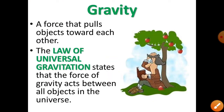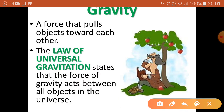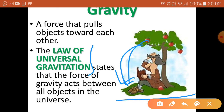In this slide you can see that gravity is a force that pulls objects towards each other. The law of universal gravitation states that the force of gravity acts between all objects in the universe. For example, the falling of the apple — there is a force of attraction from the Earth's surface. So Earth is body number 1 and the apple is body number 2, and there is a force of attraction between all bodies.